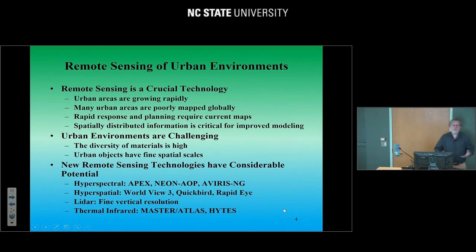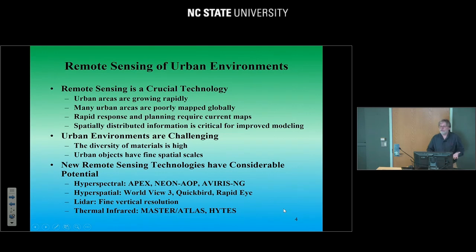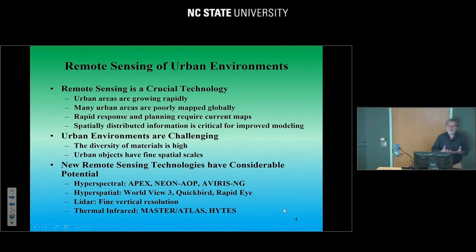If we're thinking about natural disasters like Hurricane Katrina, we need up-to-date maps — we need to know where people are, where the buildings are, where the roads are. And if we move into the modeling context, we need good geospatial data to create our models, and remote sensing is our best resource for those kinds of datasets. However, urban environments are also very challenging because they're made of many different kinds of materials, and the remote sensing we use has to cope with incredible diversity.